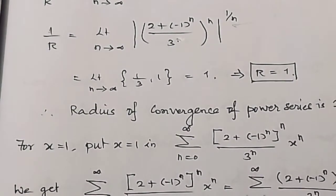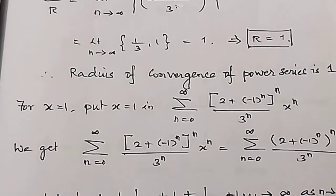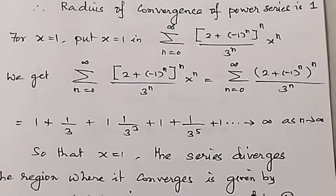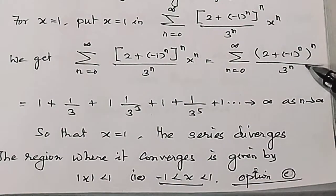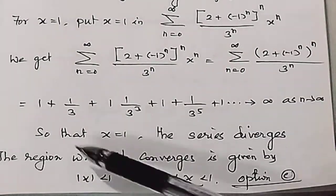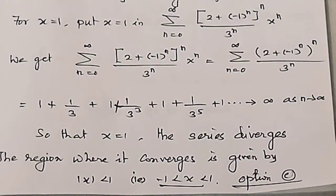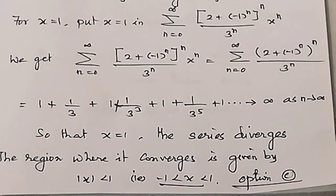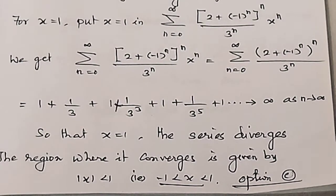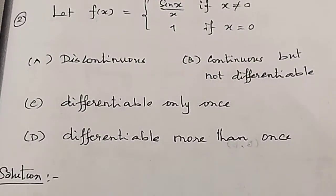For x equal to 1, we will check out. The series becomes 1 plus 1 plus 1/3 cubed plus 1/3 power 5 and so on, which tends to infinity as n tends to infinity, so x=1 diverges. Looking at the region, this is minus 1 plus 1, that is mod x less than 1, so option C is the correct option.